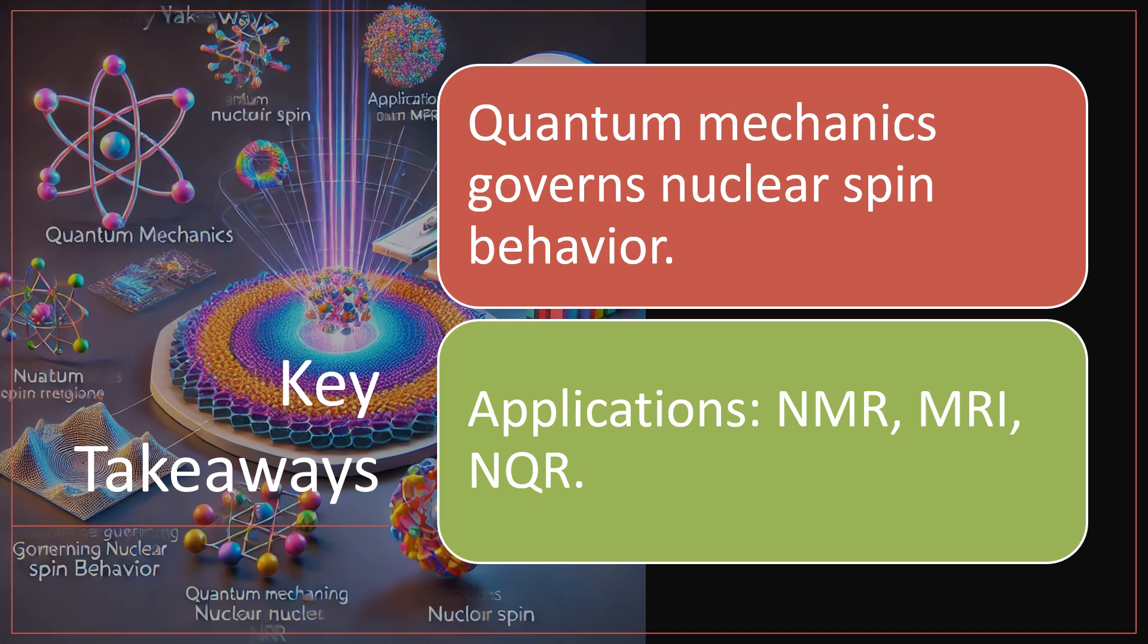Let's recap the key takeaways. Nuclear magnets are tiny magnetic moments arising from nuclear spin. Spin quantum numbers determine how nuclei behave in magnetic fields. Techniques like NMR, MRI, and NQR rely on these principles to analyze matter. These concepts link quantum physics to practical applications that benefit society.